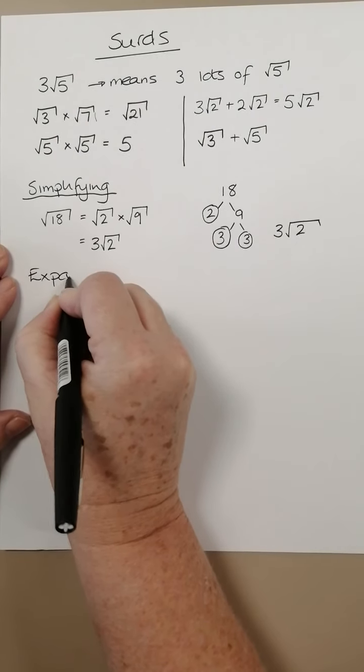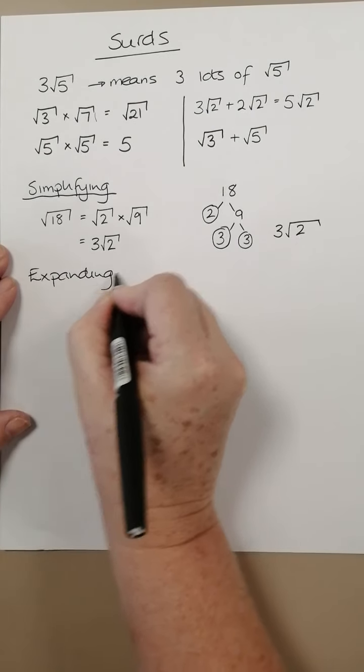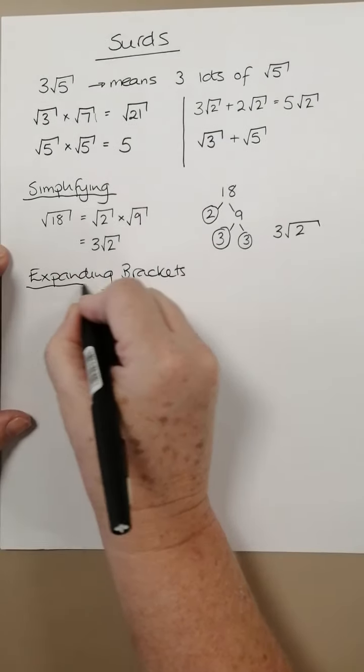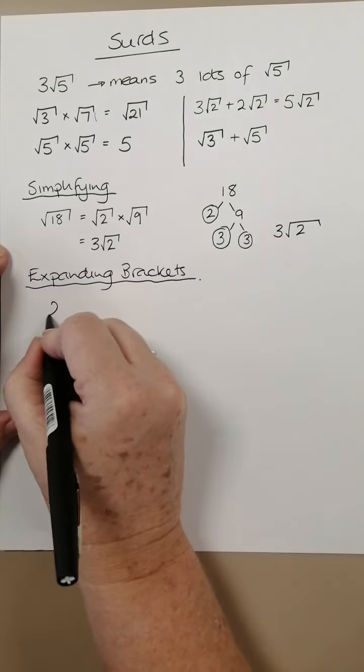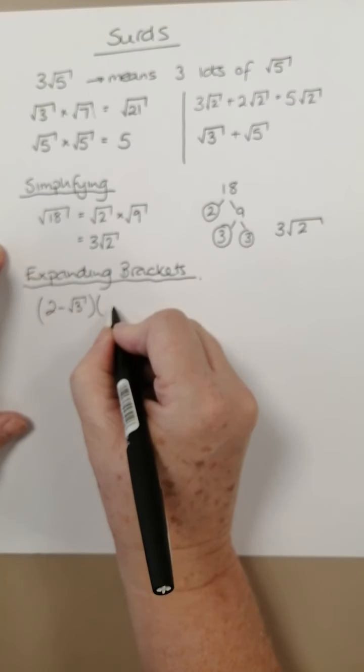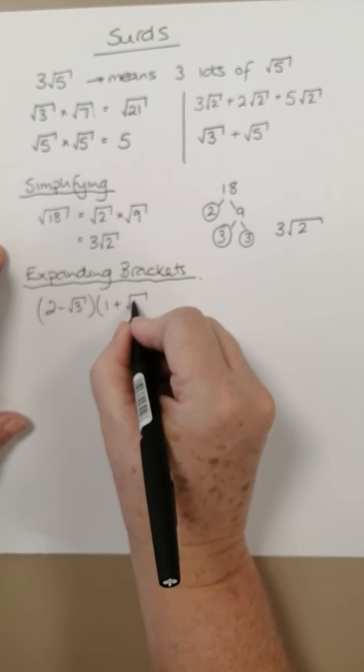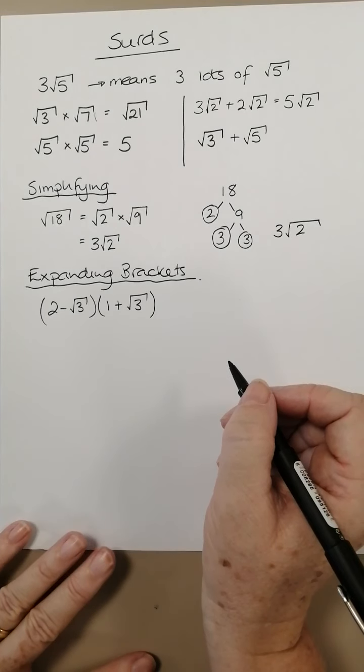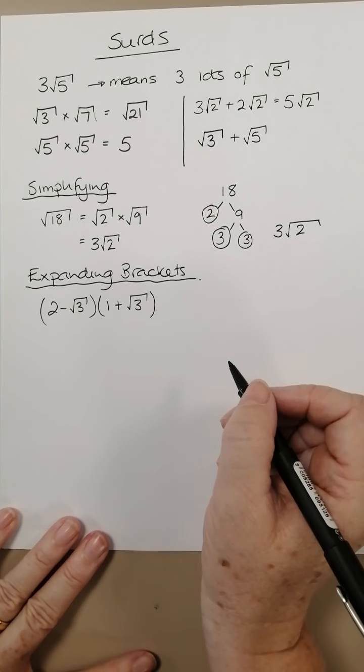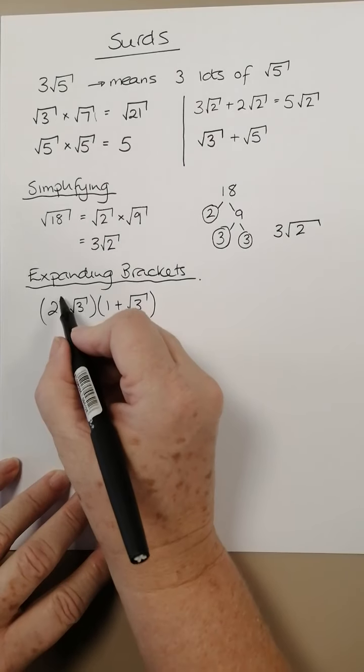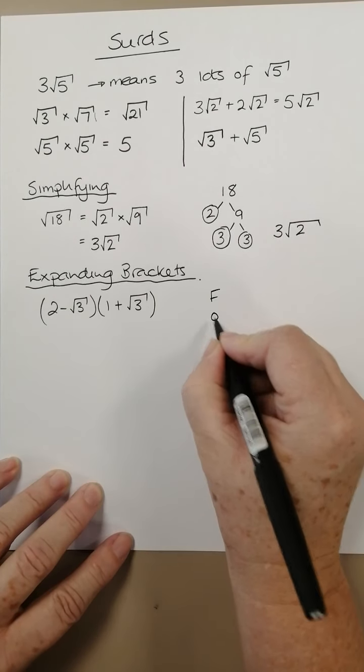If we are expanding brackets with surds, for example this, 2 take away root 3 times 1 plus root 3, we are going to use our method for expanding brackets, it's our FOIL method and it works out just the same, or you could use a grid method if you prefer that. So front, outer, inner, last.